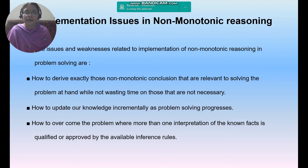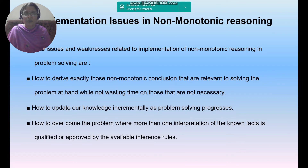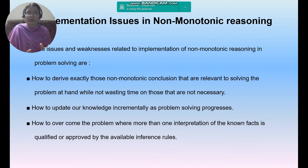The third issue is how to overcome the problem where more than one interpretation of the known facts exists. Among a collection of facts, we have to select only the relevant ones. We must pick the exact fact needed for our solution — only those facts that are qualified and approved by the available inference rules should be taken into consideration.